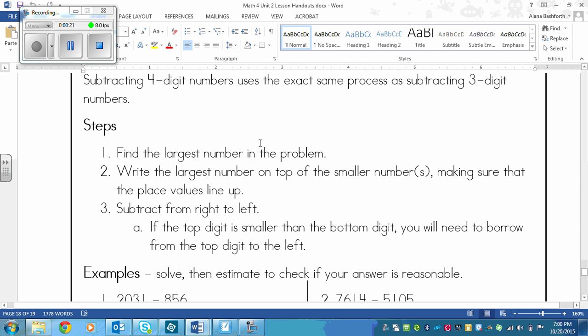Remember that step one, you're finding the largest number in the problem. So in this case, you'd be looking at the thousands place because those are four-digit numbers. And then you'd write the largest number on top of the smaller numbers, making sure that the place values line up. So both of those steps are important.